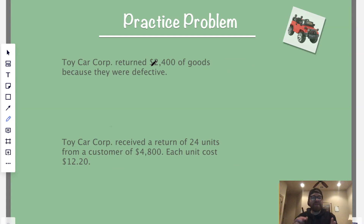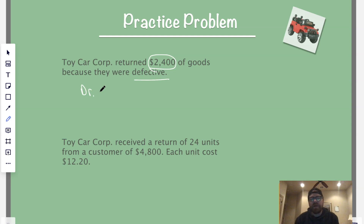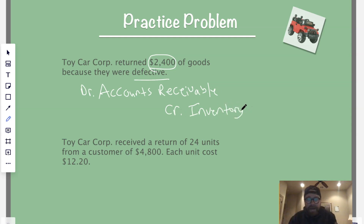Now for some more practice problems about returns from both sides. The first: Toy Car Corp returned $2,400 of goods to the supplier because they were defective. We had the inventory in our possession and now we're returning it back. We debit accounts receivable — we're waiting on the cash to come back into our accounts — and we credit inventory right away, because with perpetual inventory accounting, as soon as the change in inventory happens, you make the update to the general journal.